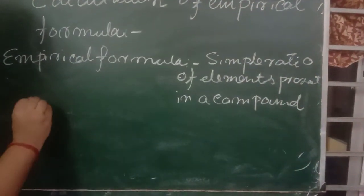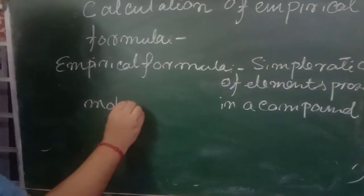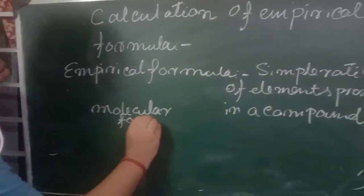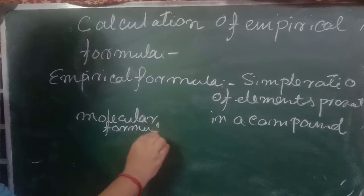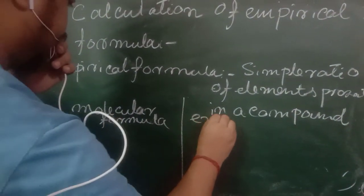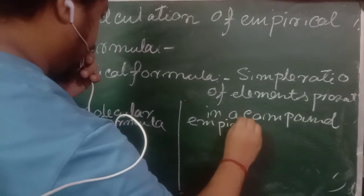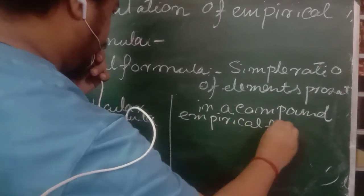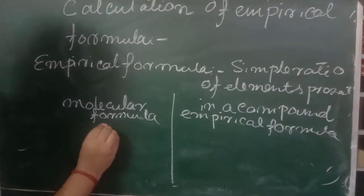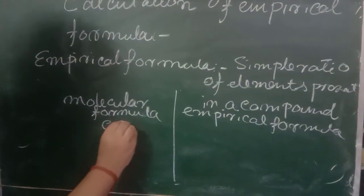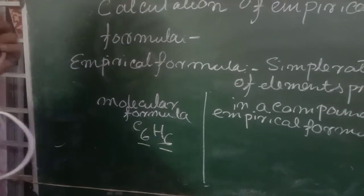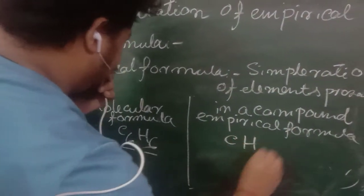For example, if the molecular formula is C₆H₆, the ratio of 6 to 6 is 1 to 1, so the empirical formula is CH.